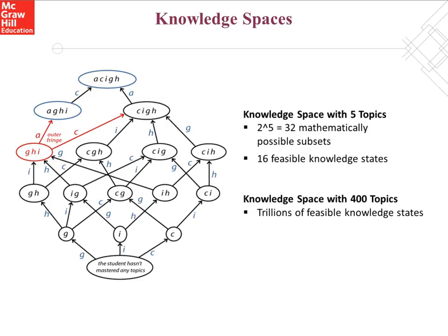Each bubble in this knowledge space represents a knowledge state, and the arrows specify the precedence relation between each knowledge state. For example, the knowledge state in red is for a student who knows how to do topics G, H, and I. That student is ready to learn topics A and C. The ultimate goal is to get each student to the full state by taking the most efficient path possible.